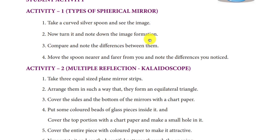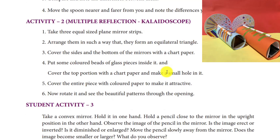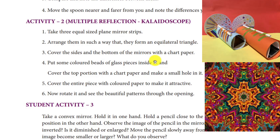From this activity, you can understand the images formed in a concave mirror and a convex mirror. The second activity is the kaleidoscope. A kaleidoscope is a cylindrical box made with three plane mirrors and glass pieces arranged inside. It works to show colorful multiple images and is helpful in the textile industry for design patterns.